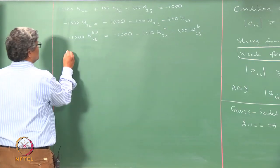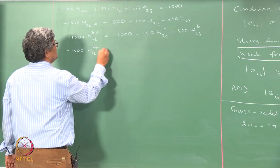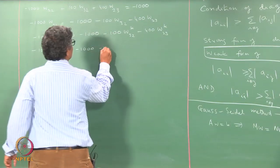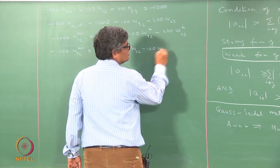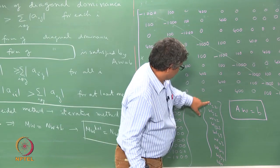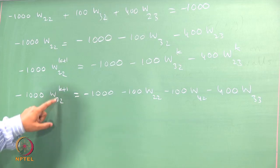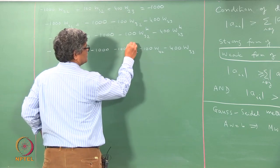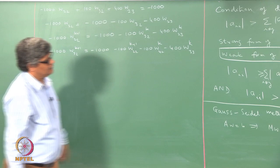From the second row, we have w32^(k+1) equal to (minus 1000 minus 100·w22^(k+1) minus 100·w42^k minus 400·w33^k) divided by 1000. Here w22 is already at the k+1 level since we solved it first, but w42 has not yet been calculated so it remains at the k level.